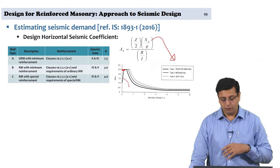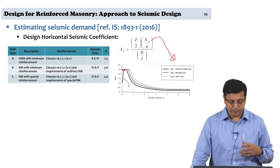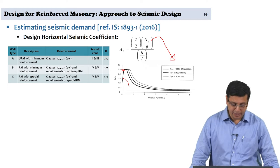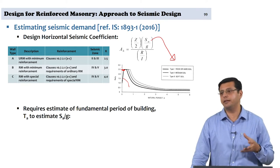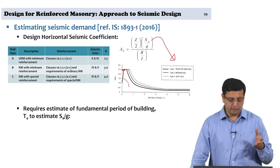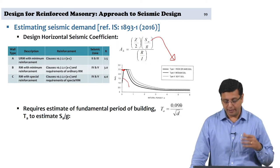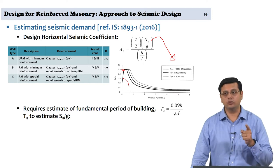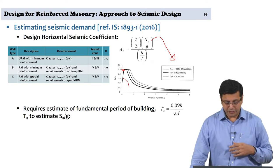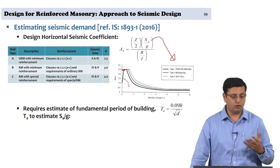For the response spectrum method, this is the elastic response spectrum from which you obtain SA by G. To get SA by G, you need to estimate a priori the fundamental period of vibration of the structure, which can be estimated from the overall dimensions: H being the total height and D the side dimension in the direction of earthquake design. After full model analysis you can iterate to check if the period used is adequate.